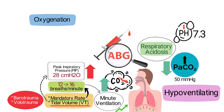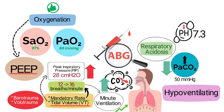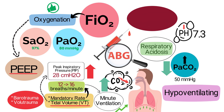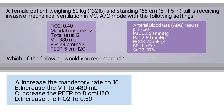The patient's oxygenation — a PaO2 of 80 and an SaO2 of 97% — is adequate. Therefore, adjusting the PEEP is not necessary. Furthermore, there's no need to increase the FiO2 since the oxygenation is sufficient. The main issue here is ventilation, not oxygenation. By reading the question carefully and breaking down the information provided, we can determine that the correct answer is A: increase the mandatory rate to 16.